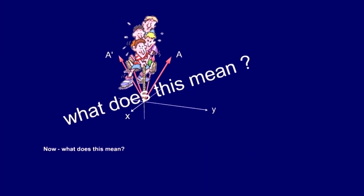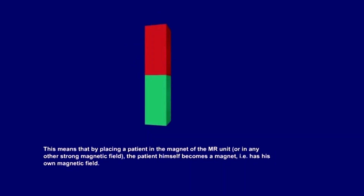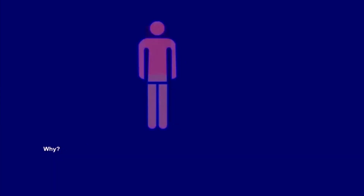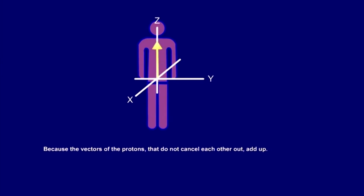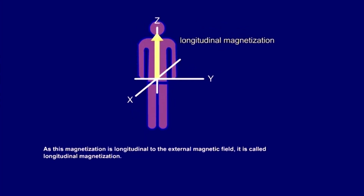What does this mean? This means that by placing a patient in the magnet of the MR unit, or in any other strong magnetic field, the patient himself becomes a magnet — in other words, has his own magnetic field. Because the vectors of the protons that do not cancel each other out add up. As this magnetization is longitudinal to the external magnetic field, it's called longitudinal magnetization. This new magnetic vector is important because it is the one that may be used to get a signal.